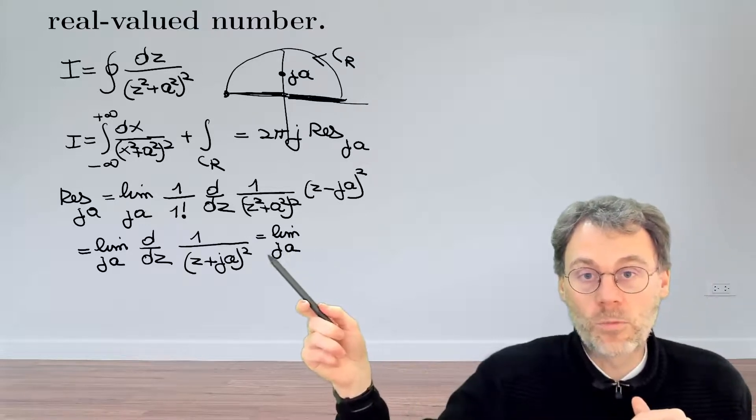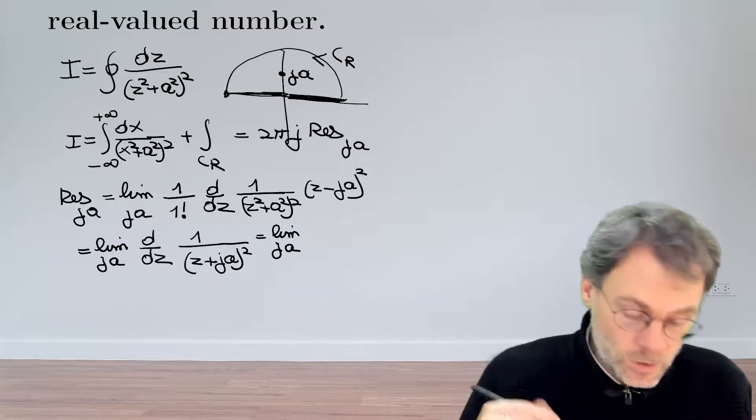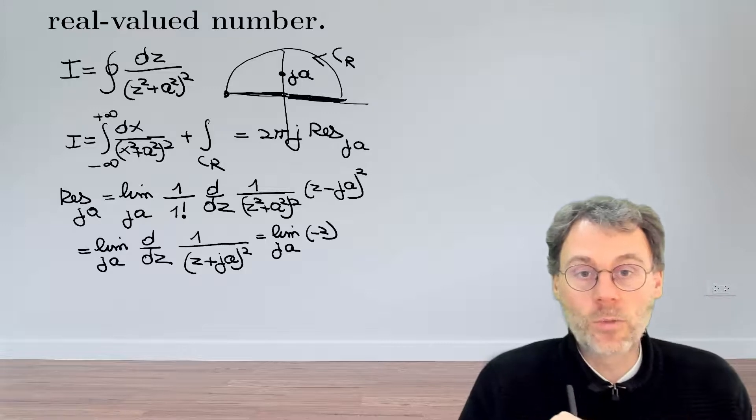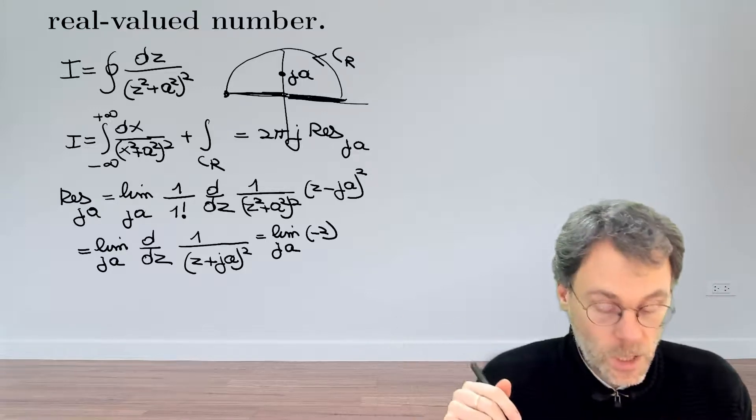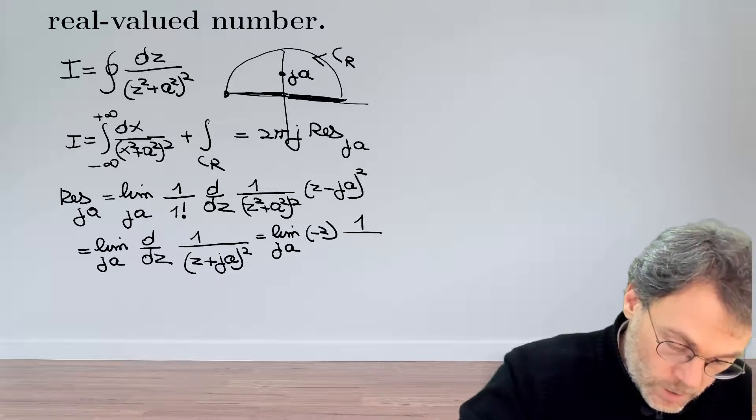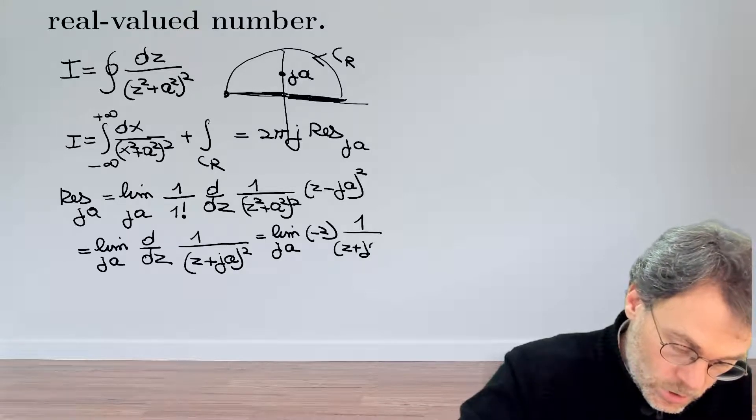...of something raised to the power of minus two. So this minus two comes in front and then we decrease our exponent by one, we end up at minus three or one over something to the third power. So one over z plus ja cubed.